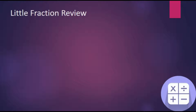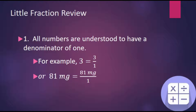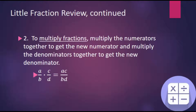Let's take a quick look at some fraction concepts we need for dimensional analysis. First, all numbers are understood to have a denominator of 1: 3 is equal to 3 over 1, and 81 milligrams is equal to 81 milligrams over 1. When we multiply fractions together, we multiply the numerators together to get the new numerator, and multiply the denominators together to get the new denominator.